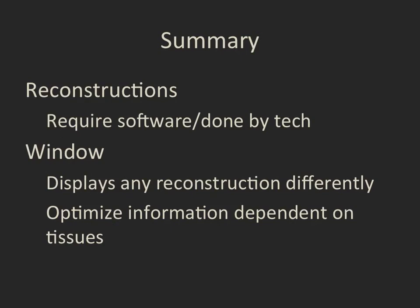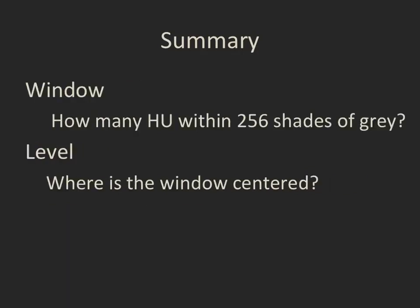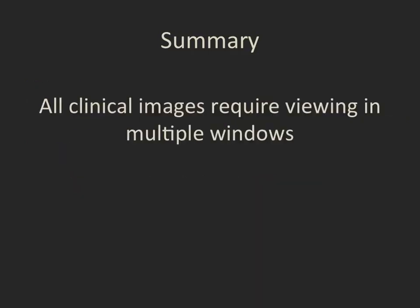To summarize: reconstructions of CT scans require specialized software and are usually done by the technologist on the raw data. But the window allows you to change the display of any reconstruction to maximize the information available for interpretation, depending on the tissues you want to look at. The window is how many Hounsfield units you wish to display within those 256 shades of grey — the narrower the window, the more contrasty the image and the more subtle the changes you can see. The level is where you center that window. To maximize diagnostic information from any CT scan, all clinical images require viewing on multiple windows.